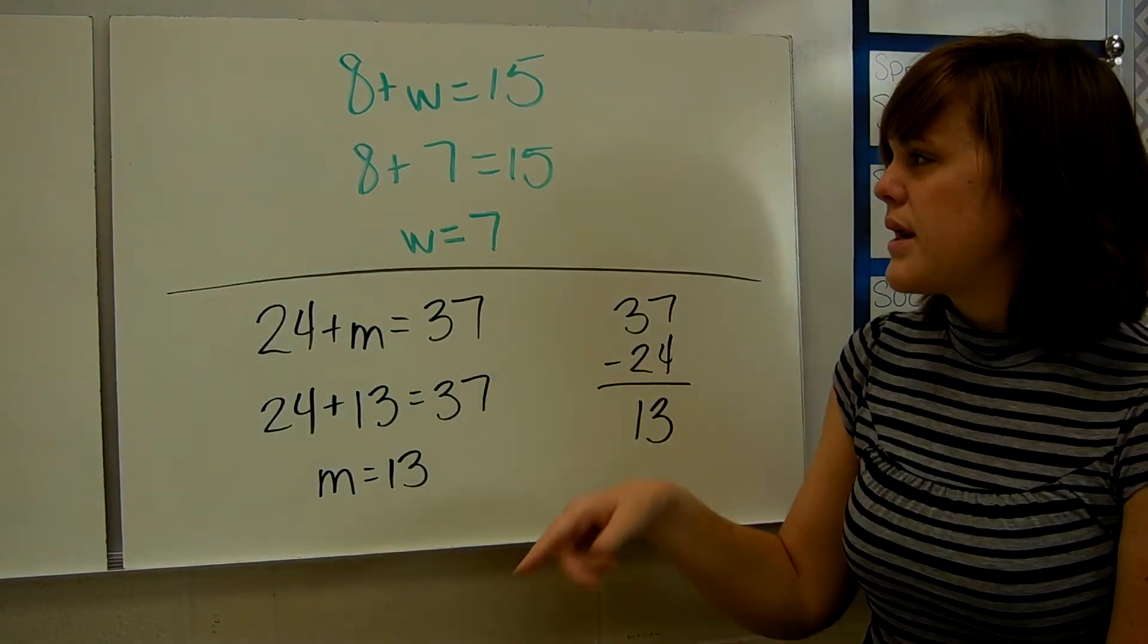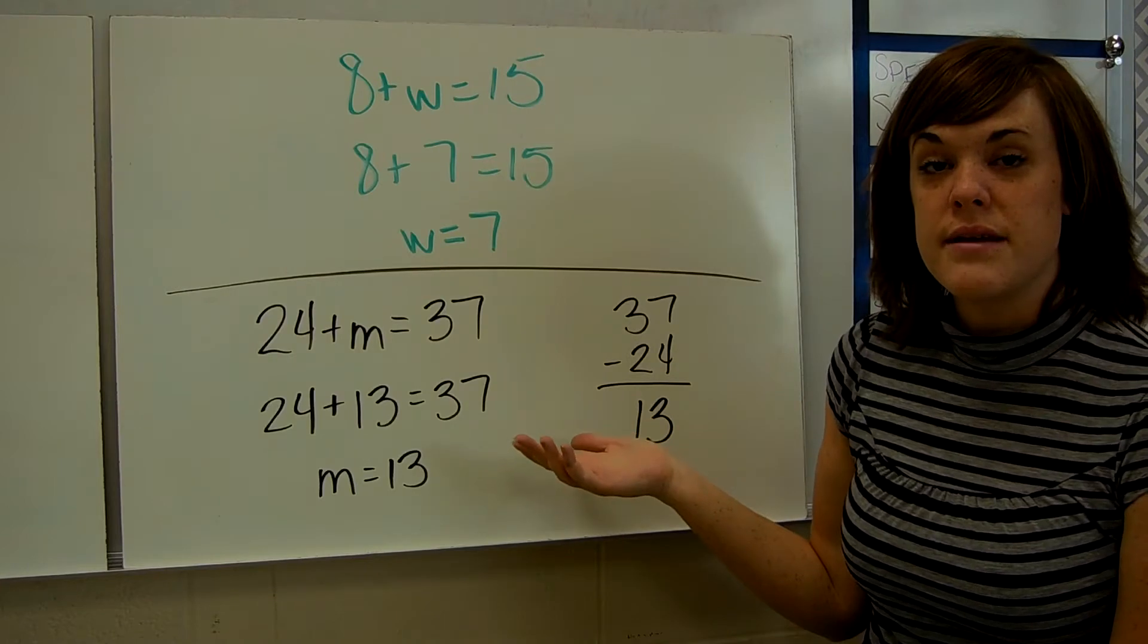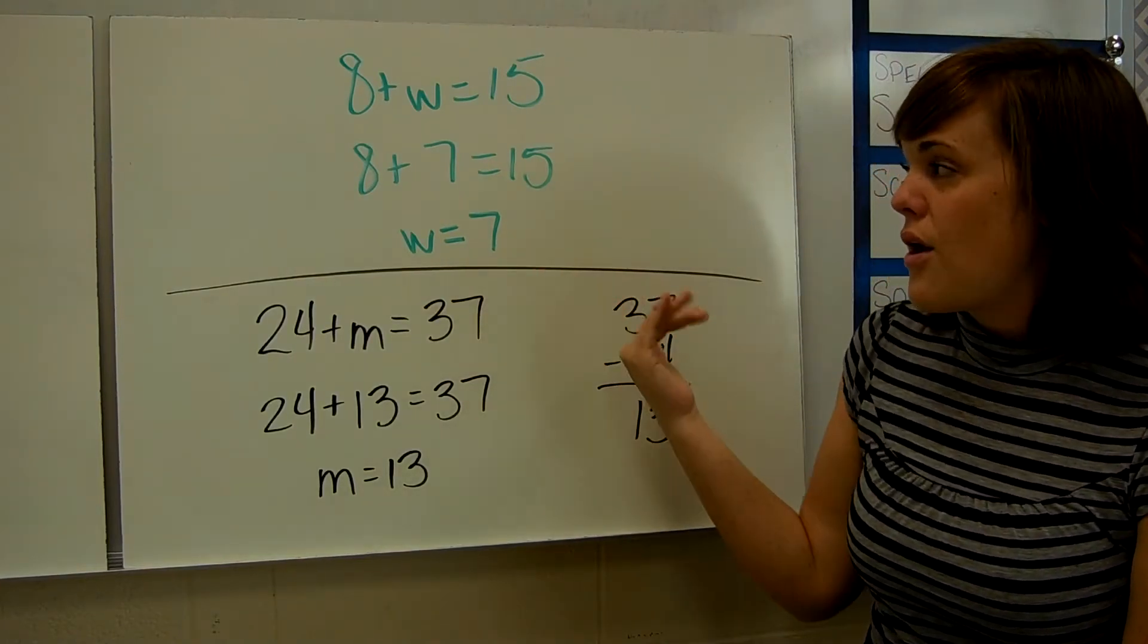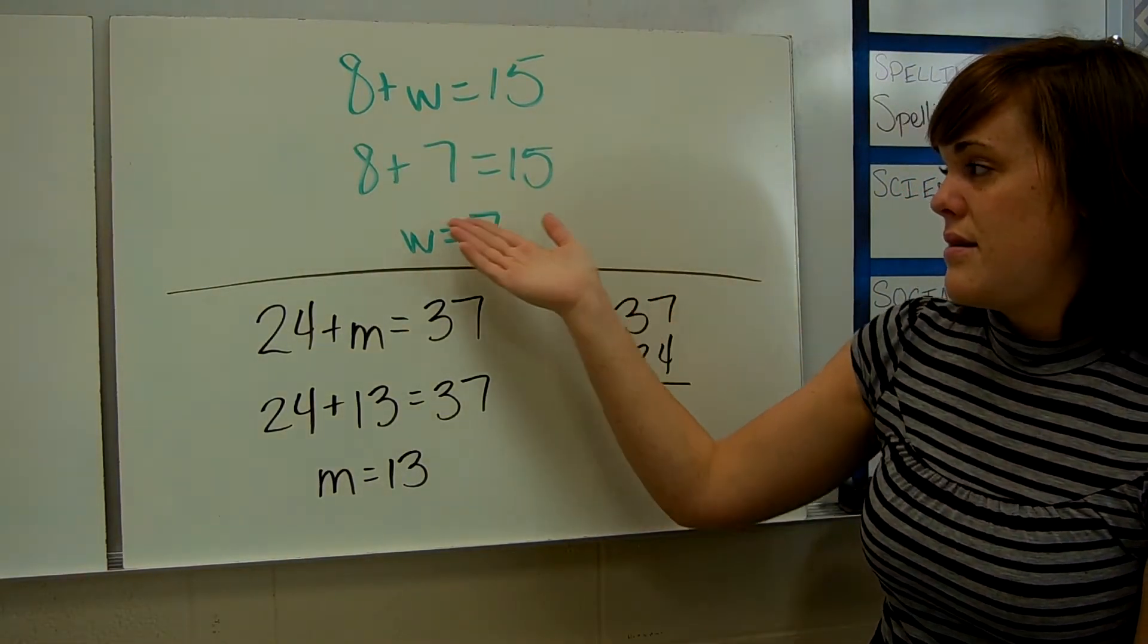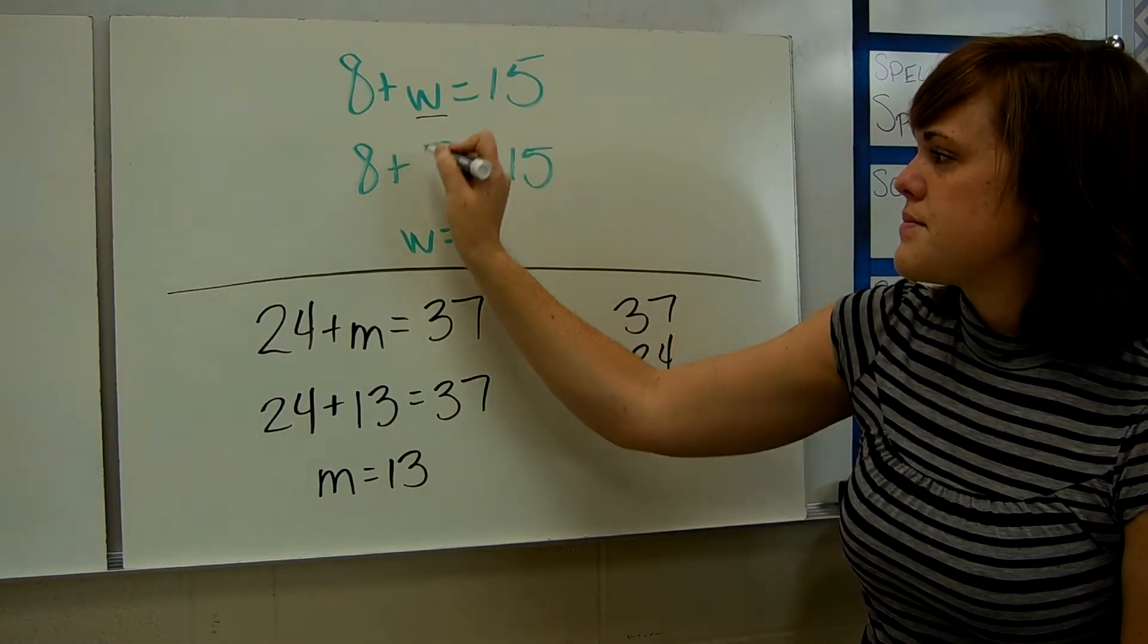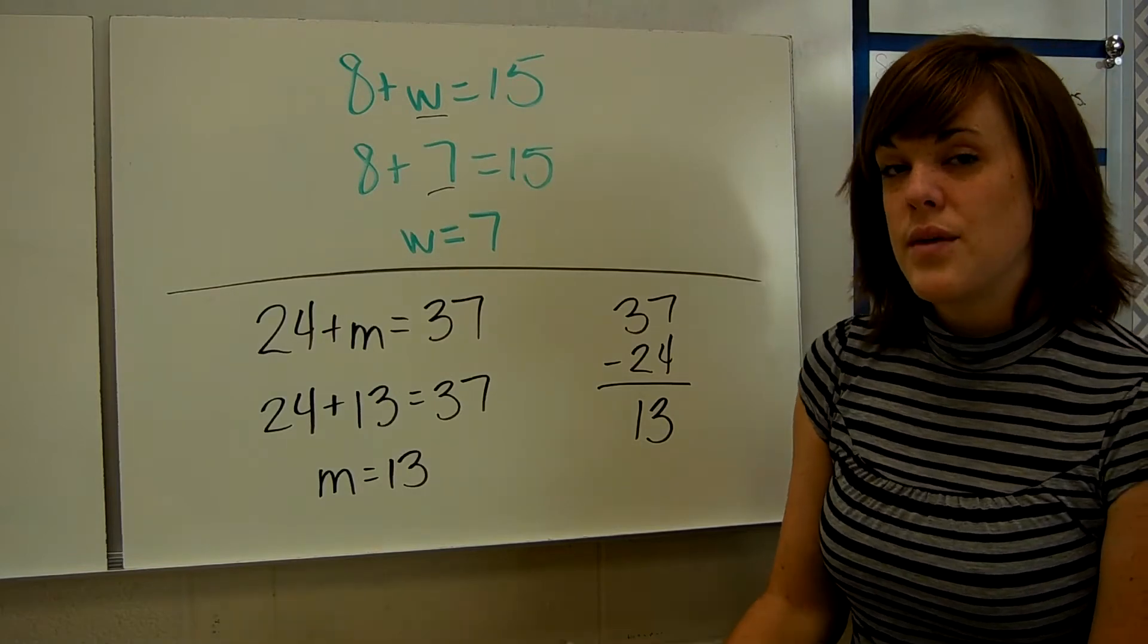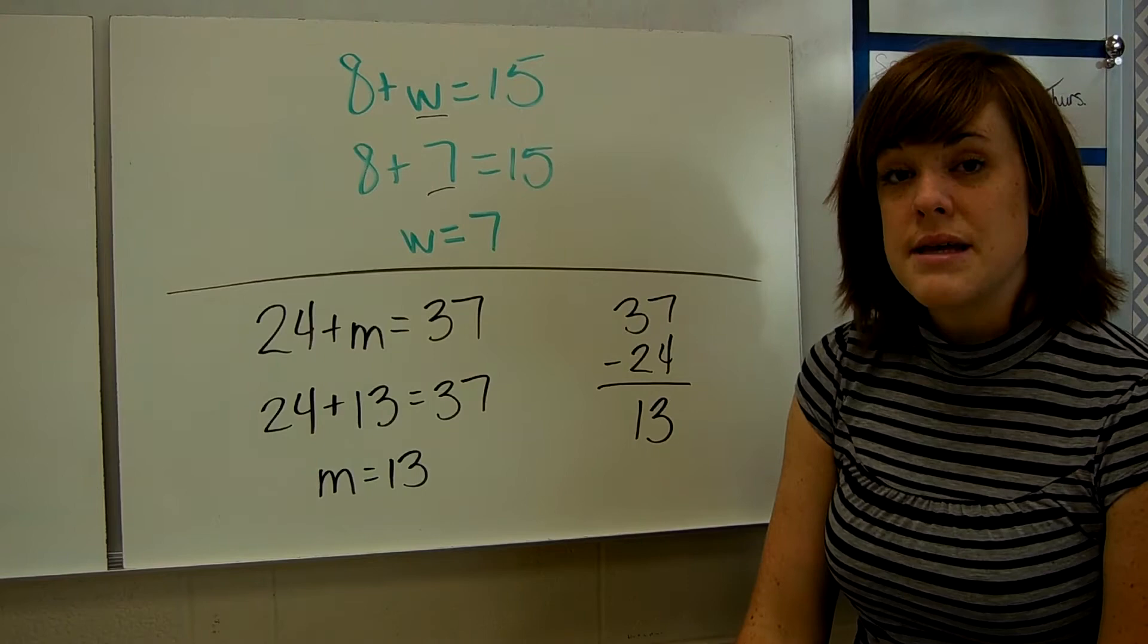So let's go back to that one I had written on the bottom of the last slide, 8 plus W is 15. That one's fairly simple. You might know that 8 plus 7 is 15, and it is. So the W here has to equal 7. So if I was solving that equation, I would solve it for W, and W would be 7.